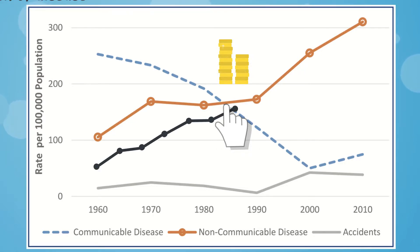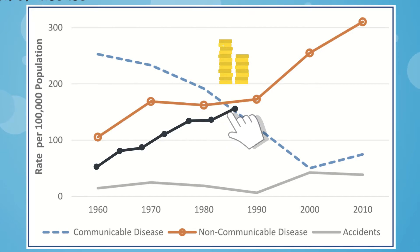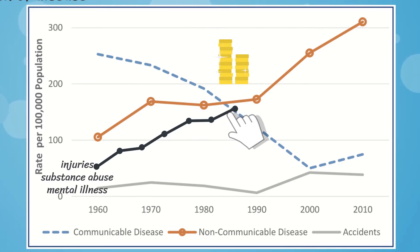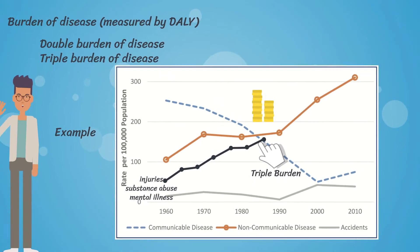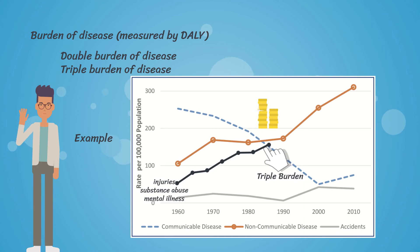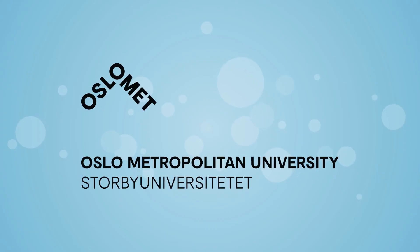And if we also had a high level of mortality due to injuries, substance abuse, and mental illness, it creates the triple burden of disease. Thank you for listening.